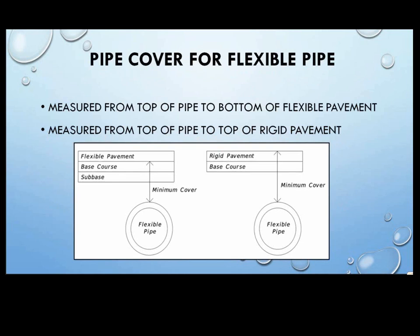Here is one of the scenarios with the control point. For flexible pavement with flexible pipe — that's either plastic or metal pipes — the minimum pipe cover is measured from the top of the pipe to the bottom of the flexible pavement. For rigid pavement, the minimum cover of the flexible pipe is measured from the top of the pipe to the top of the pavement. These diagrams are located throughout Appendix E. This is a big change from the 205 standard.